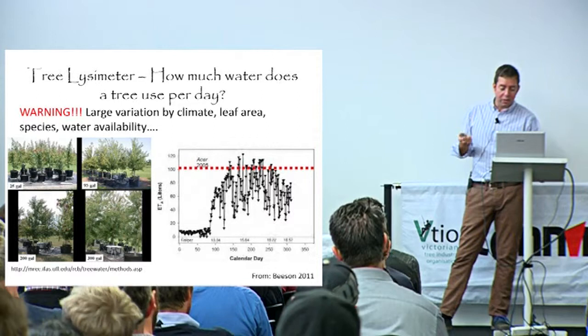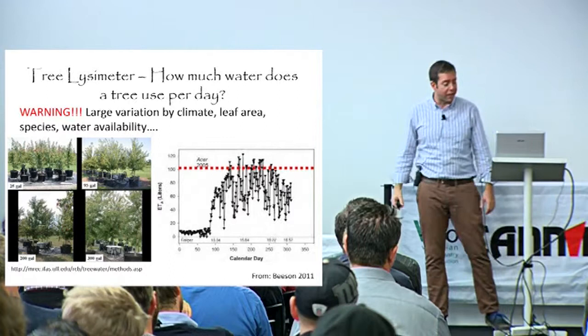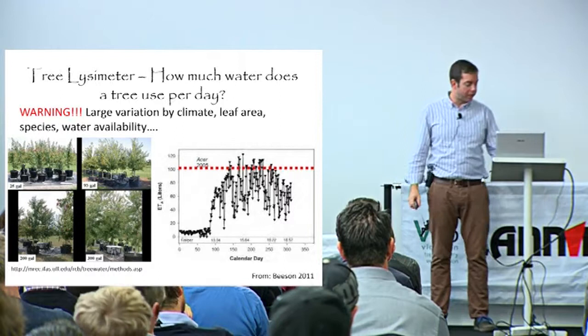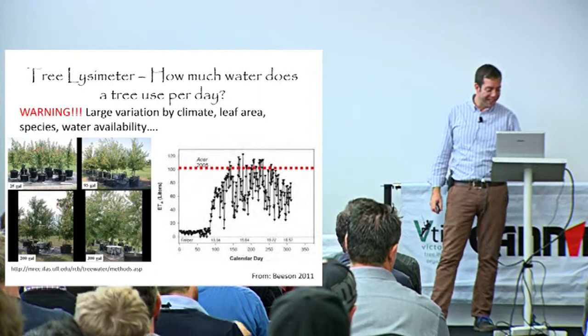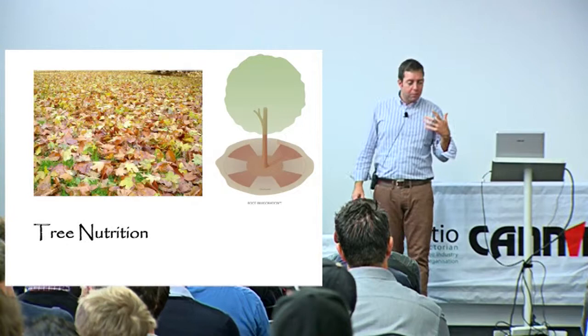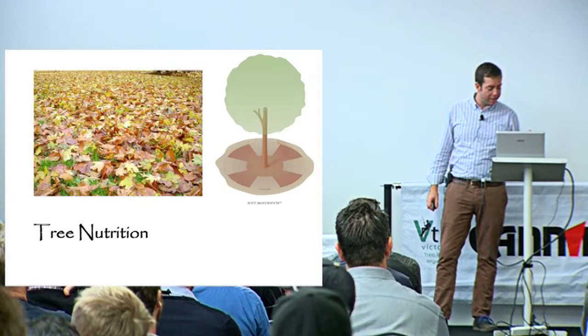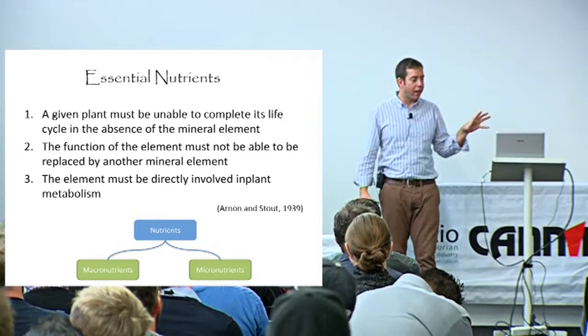It's really quite complicated to work out how much water a tree uses - there's a lot of variation by climate, leaf area, species, and water availability. But that nicely illustrates the point. Moving now to a little bit about tree nutrition - it's a really complex field and I'm going to try and unpack a little bit of it.